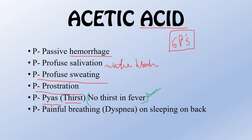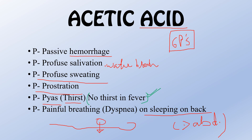The last P represents painful breathing, or dyspnea on sleeping on the back. When the Acetic Acid patient lies on their back, their problem worsens. When they sleep on the abdomen it is better, but sleeping on the back causes a sinking sensation, making it difficult to breathe and leading to dyspnea.